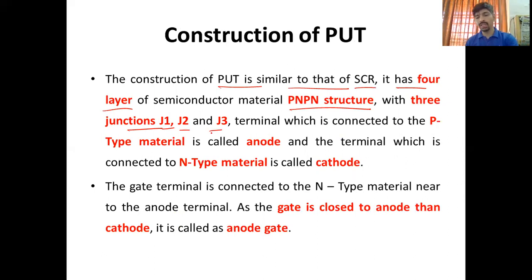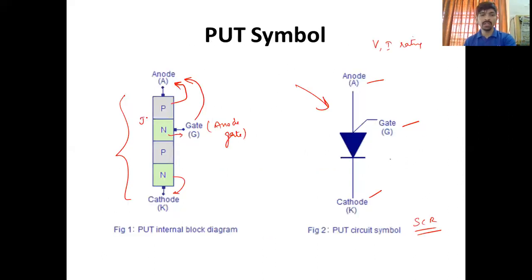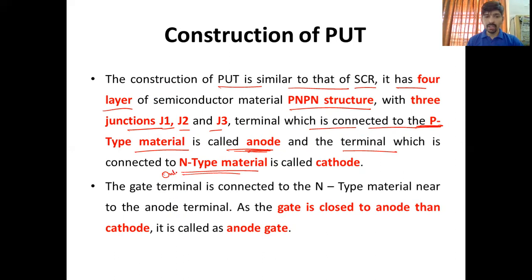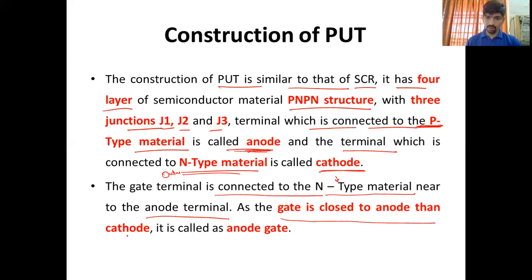Three junctions are present — J1, J2, and J3. The terminal connected to the outer P-type material is called anode, and the terminal connected to the outer N-type material is called cathode. The gate terminal is connected to N-type material near to the anode terminal — इसलिए इसको anode gate भी बोलते हैं, because यह anode के close है।